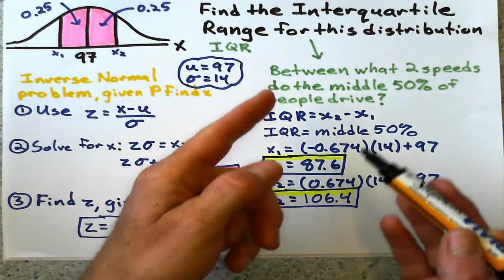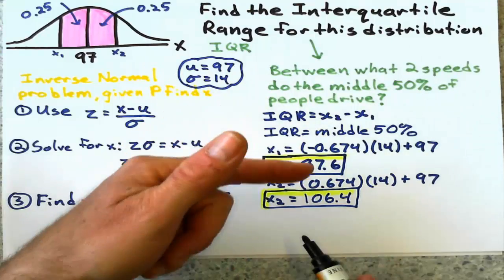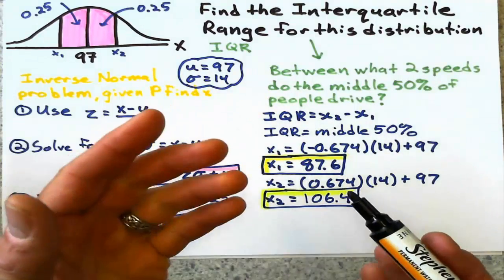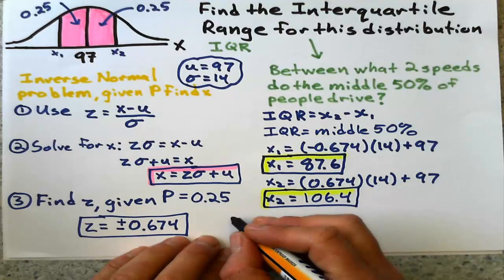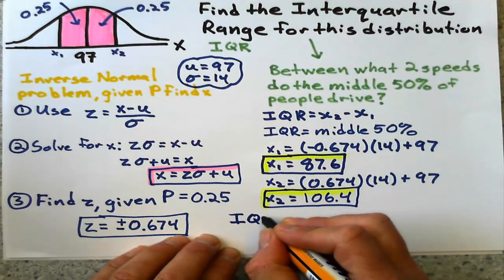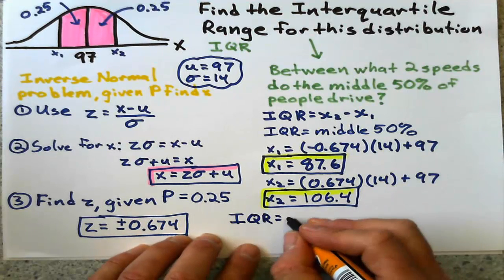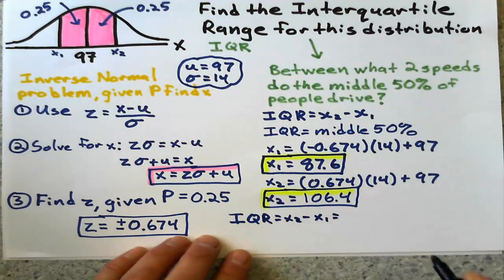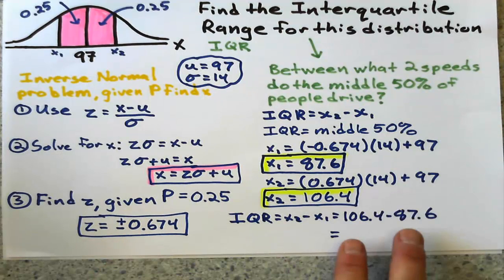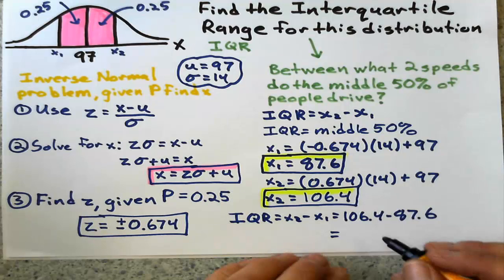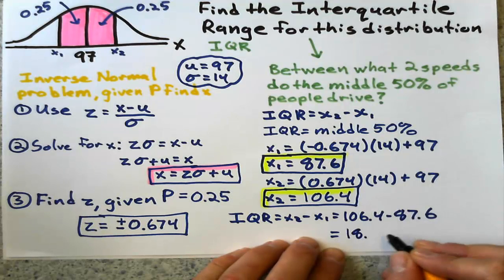Maybe you could just put these two answers because my question said between what two speeds, but if it asks for the range, technically it's the difference between the two. So that would give us 106.4 minus 87.6, which gives us 18.8 kilometers per hour.